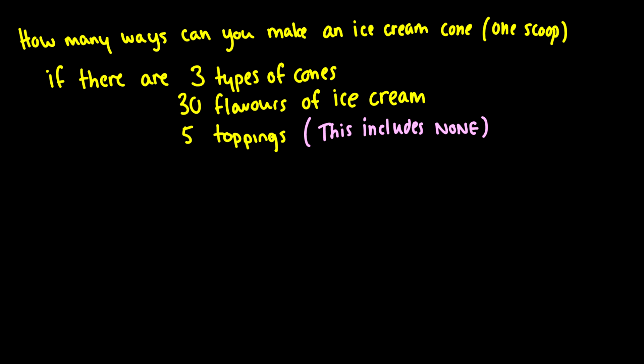Okay, here's one. How many different ways can you make an ice cream cone with one scoop? If you're given a choice of three types of cones, 30 flavors of ice cream, and five toppings. But we're really going to say there's four toppings, and one of your options is to have no toppings. So we're going to say it's five toppings.